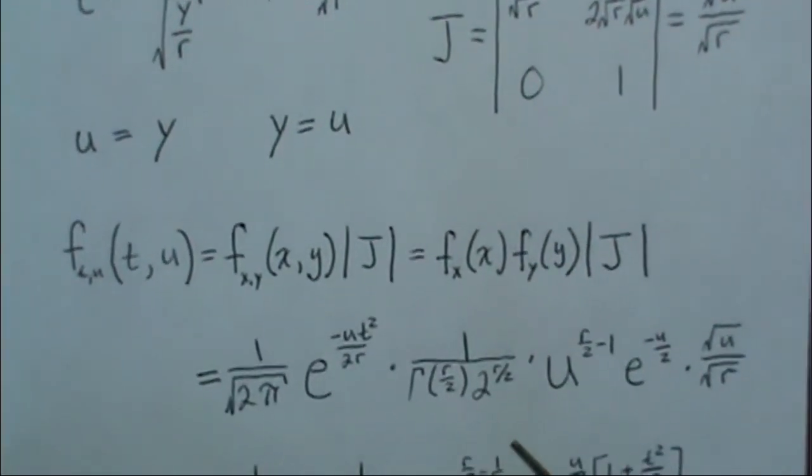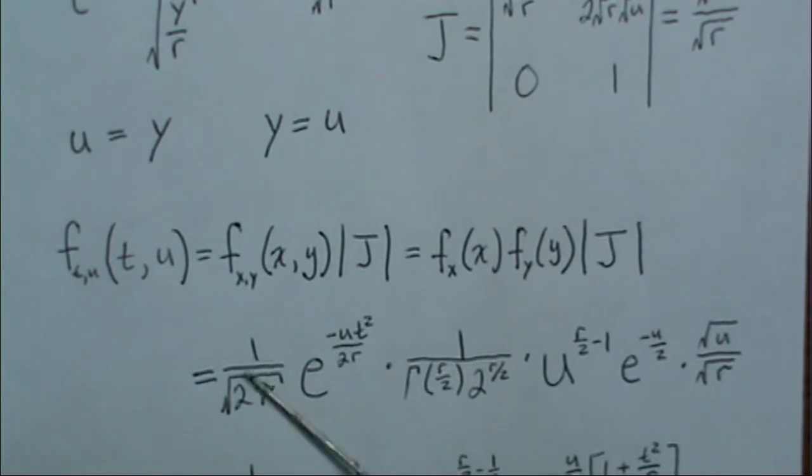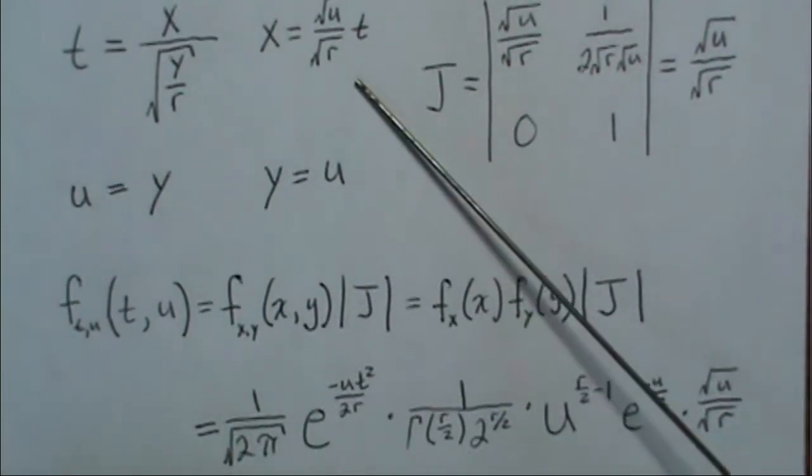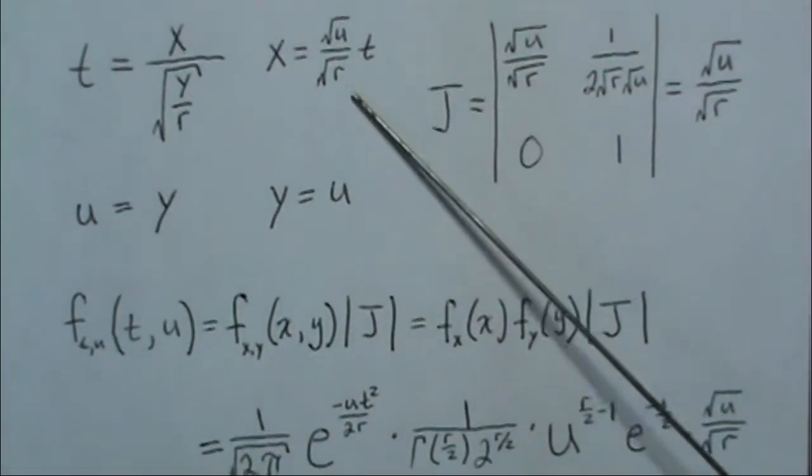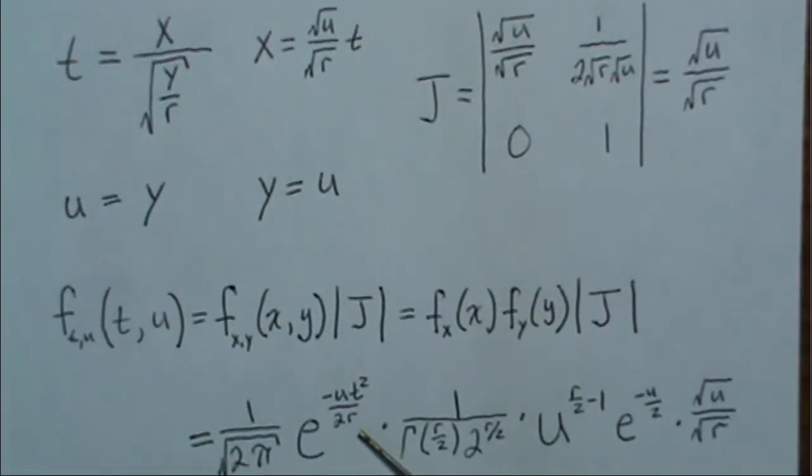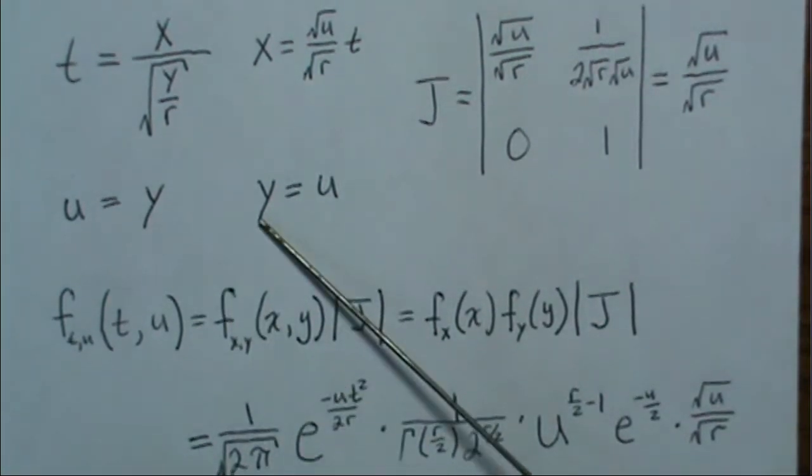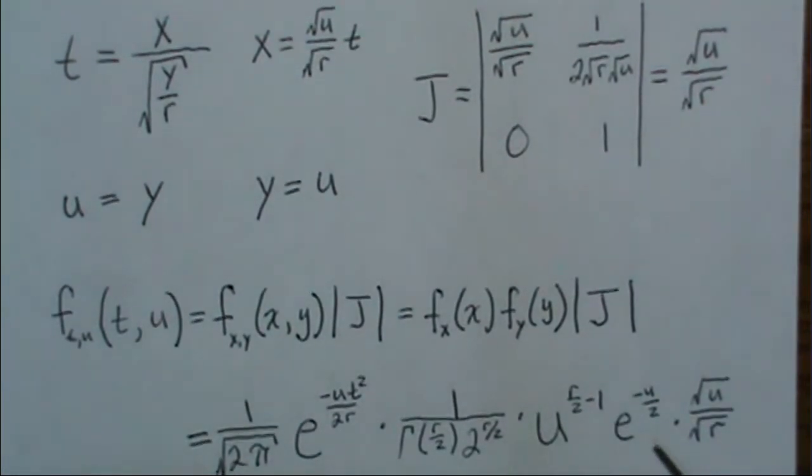So here is the standard normal, but in place of x, we replace this value right there. And in place of y, we substitute u in the chi-squared distribution.